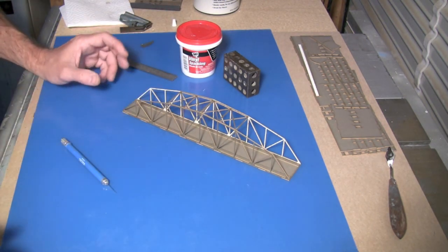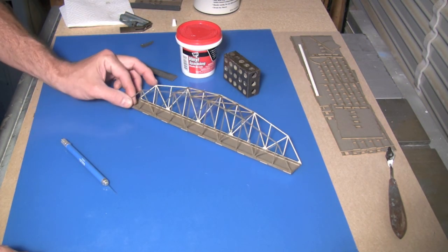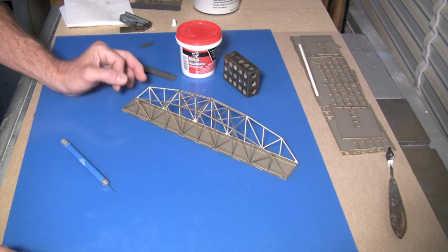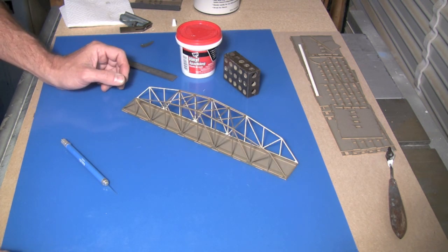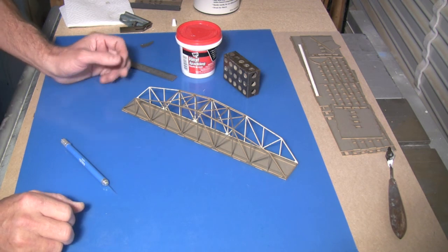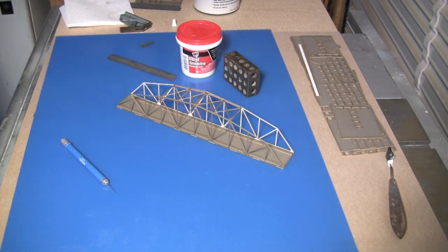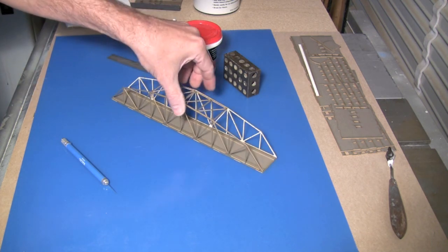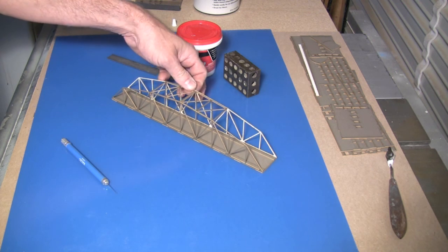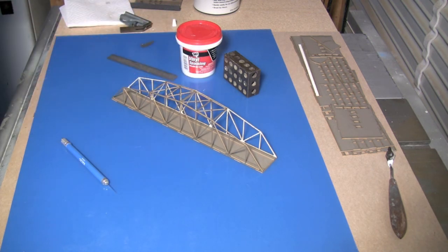And once that's done, spray it with some primer. And this one will actually just stay primer color—I just want it gray like the last one I did—and then I'll do a little weathering on it. But there you go. In just a couple of minutes, I'm not even sure how many it was, probably four or five minutes at the most, completely assembled model. I just let it sit here, let the glue dry, and we got it.